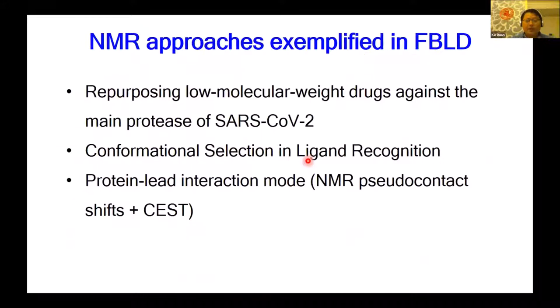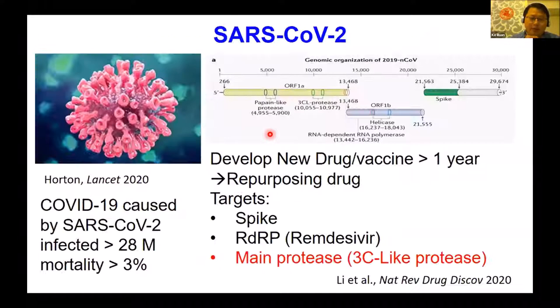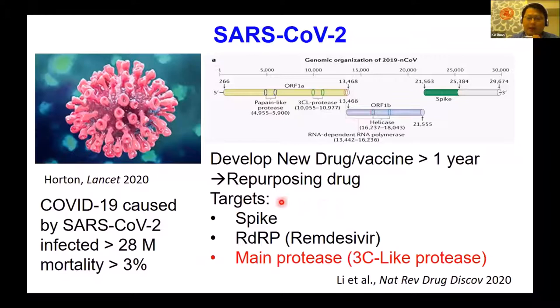Today I would like to show two examples. The first one is repurposing low molecular weight drugs against the main protease of SARS-CoV-2. As we know, the COVID-19 pandemic is caused by SARS-CoV-2 virus; so far it has infected over 28 million people and the mortality rate is over a significant percentage. The SARS-CoV-2 virus has several proteins, and three are considered viable drug targets.